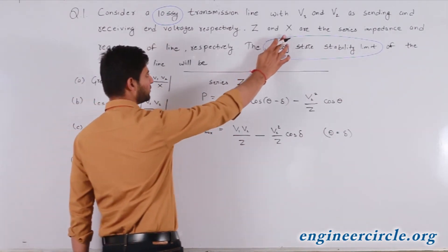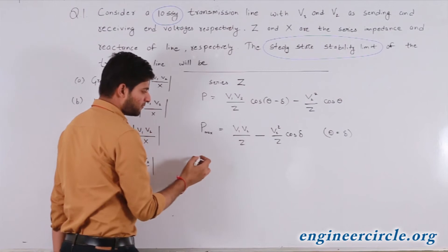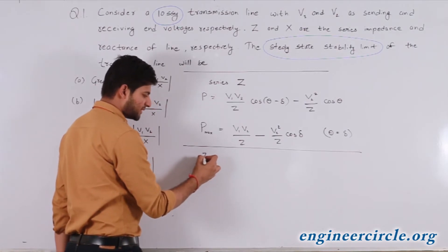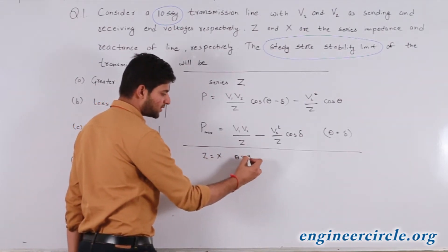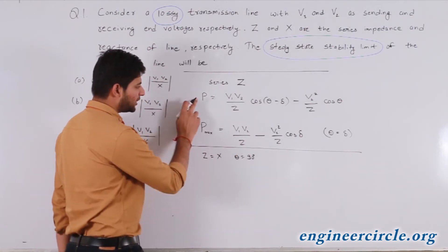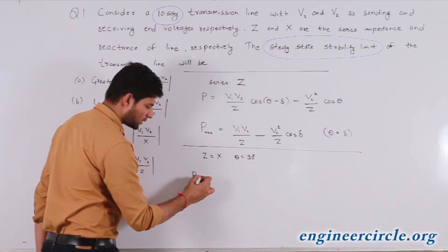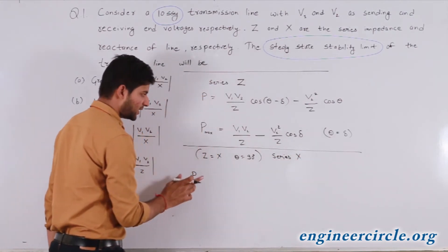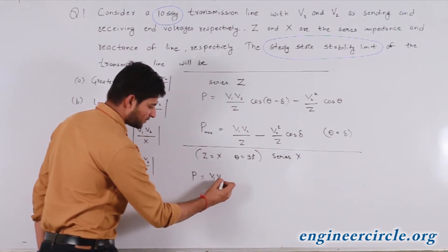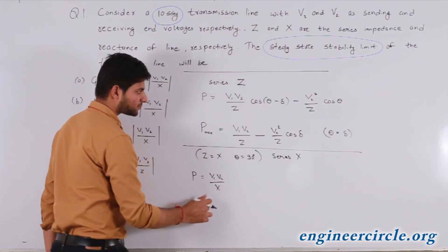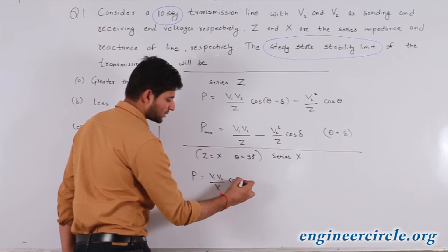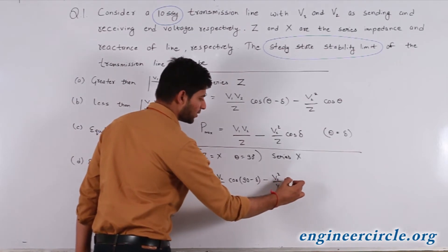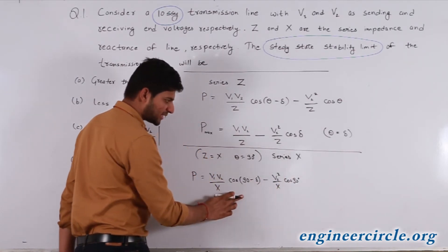Next, we will consider the value of series reactance X only. When we consider the series reactance X only, Z becomes equal to X, and then θ becomes equal to 90°. In that case, the value of power flow P will be equal to V1V2/X · cos(90° − δ) minus V2²/X · cos 90°. Since cos 90° = 0 and cos(90° − δ) = sin δ, this simplifies further.